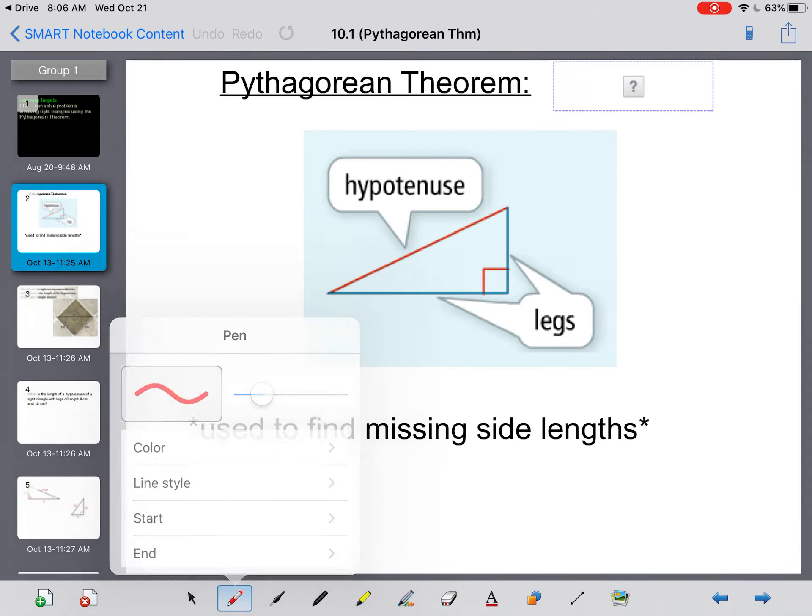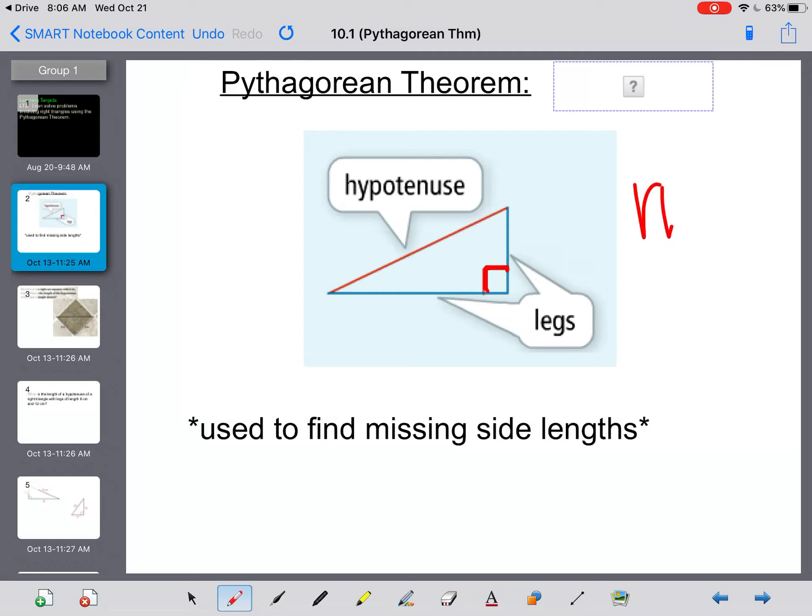So first let's talk about what this Pythagorean Theorem actually is. Pythagorean Theorem only works for right triangles. Notice that this one has the little box here, so that means that it is a right triangle. It means it has a 90-degree angle. The Pythagorean Theorem is a way for you to find the length of a missing side if you have a right triangle.